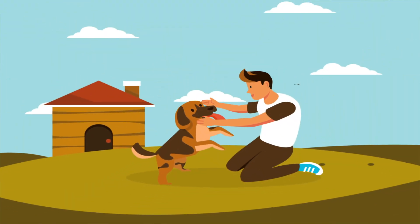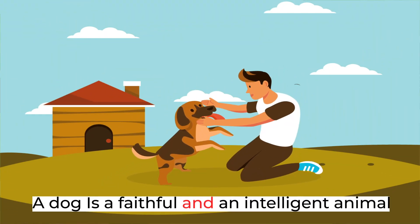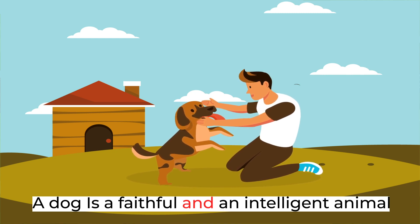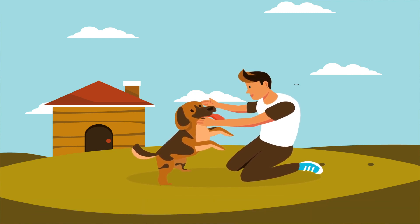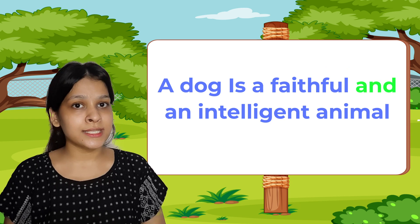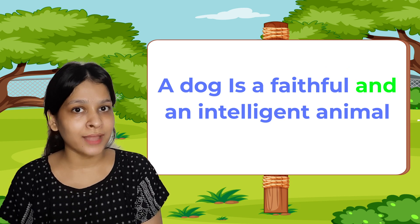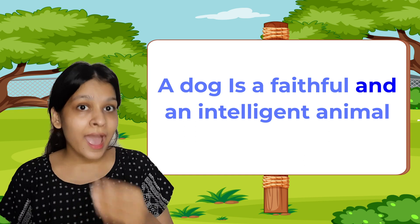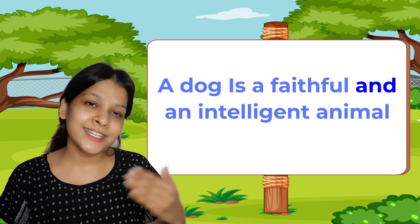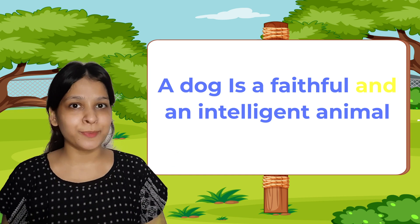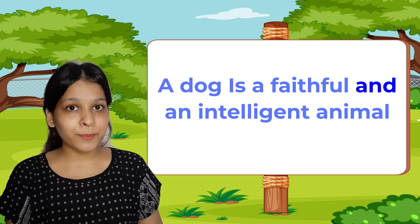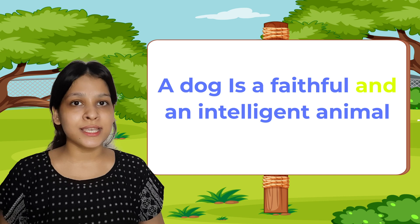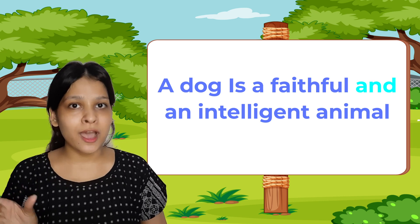For example, 'A dog is a faithful and an intelligent animal.' In this sentence, we are talking about a dog that is faithful and intelligent. So in this type of sentence, we will use 'and.'